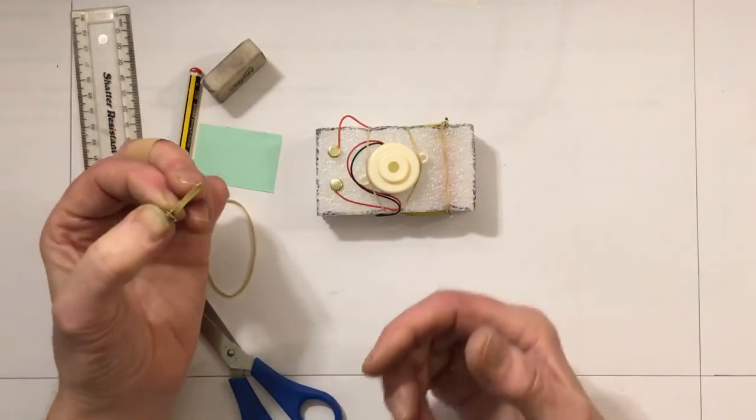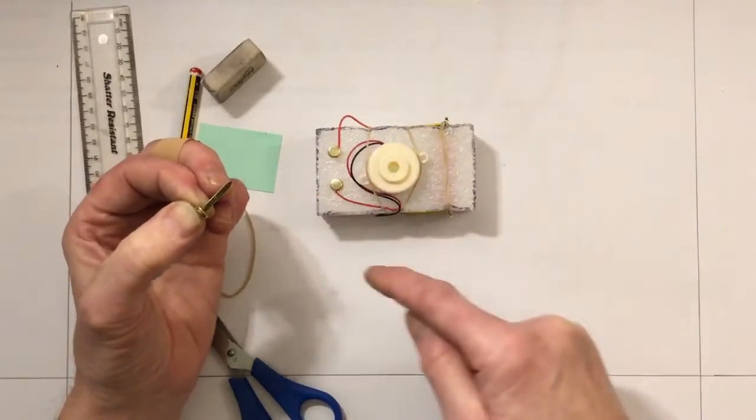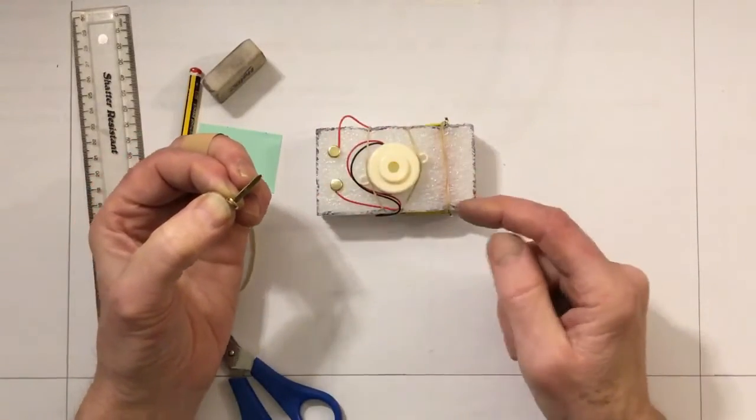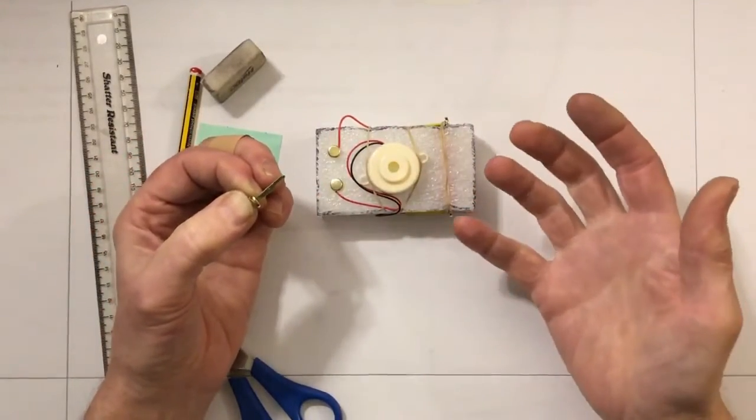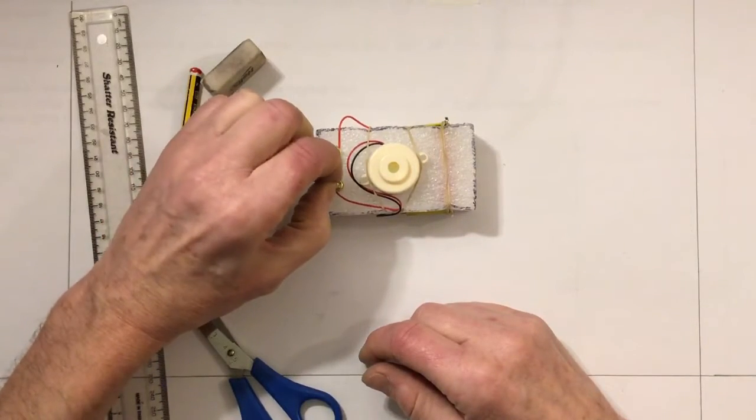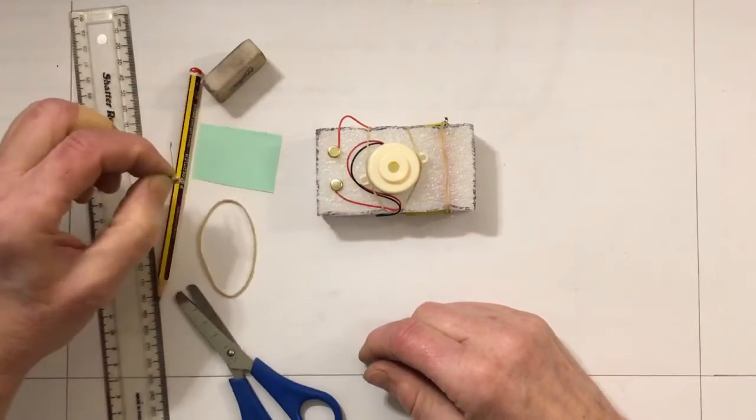That proves that our circuit works and that electricity must be traveling all the way through all of the wires and the buzzer from the battery. We complete the circuit by bridging that little gap.